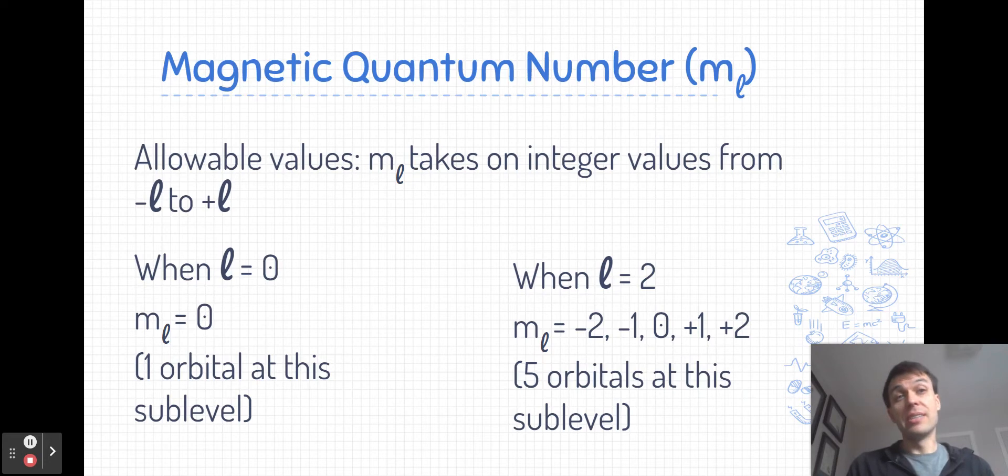If we move to l is equal to two, the possible values range from negative l to positive l. As a result, we have five possible values: negative two, negative one, zero, positive one, and positive two. That means when l is equal to two, which was a d-type sublevel, there are five orbitals at this sublevel. An orbital is the region in space where we're likely to find an electron, so that means there are five distinct regions that can hold electrons.